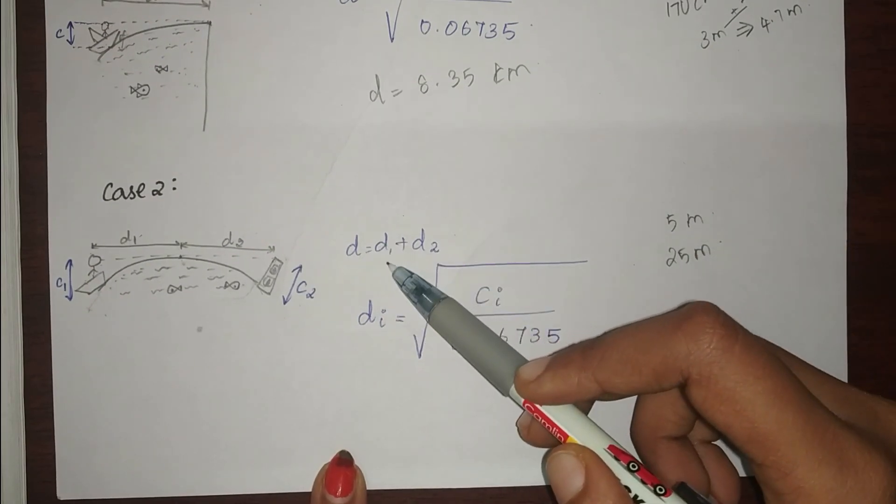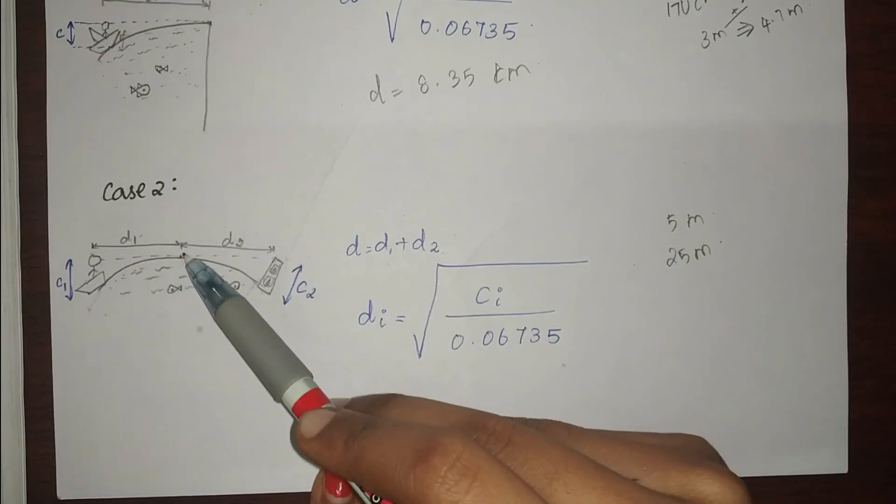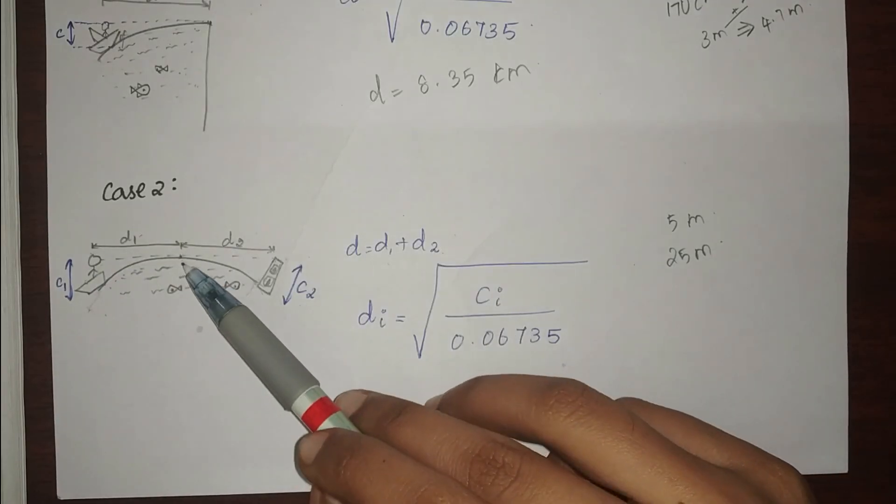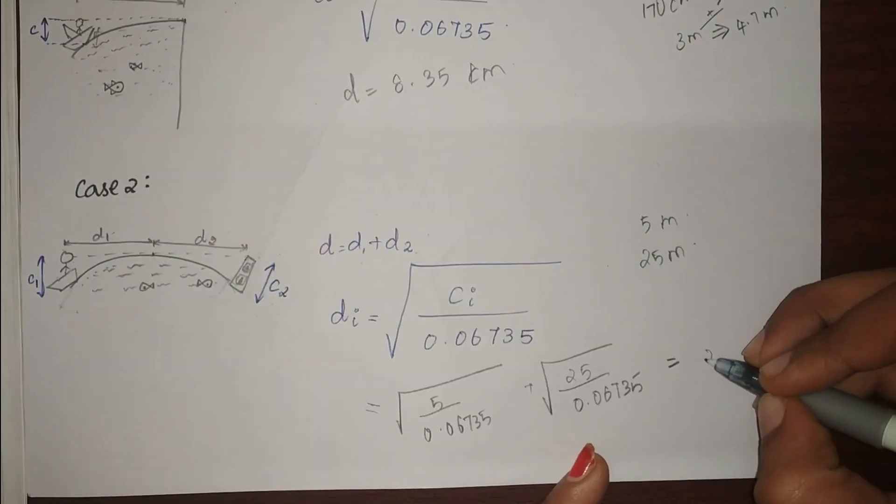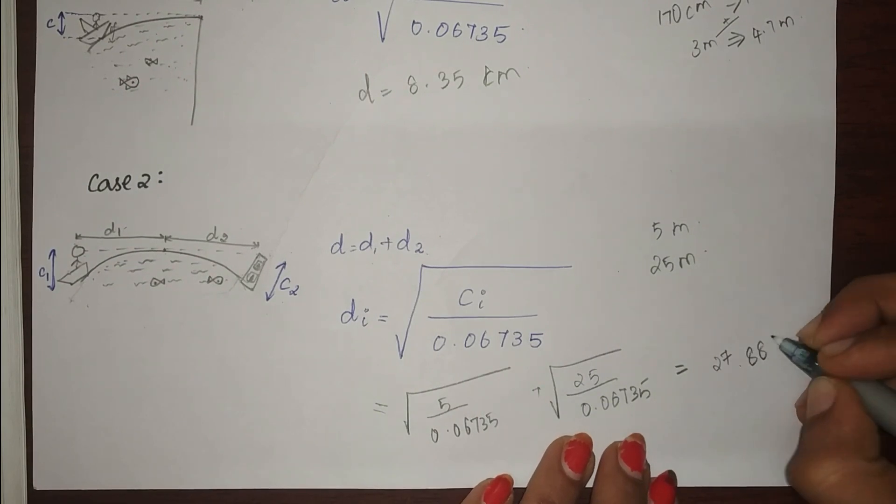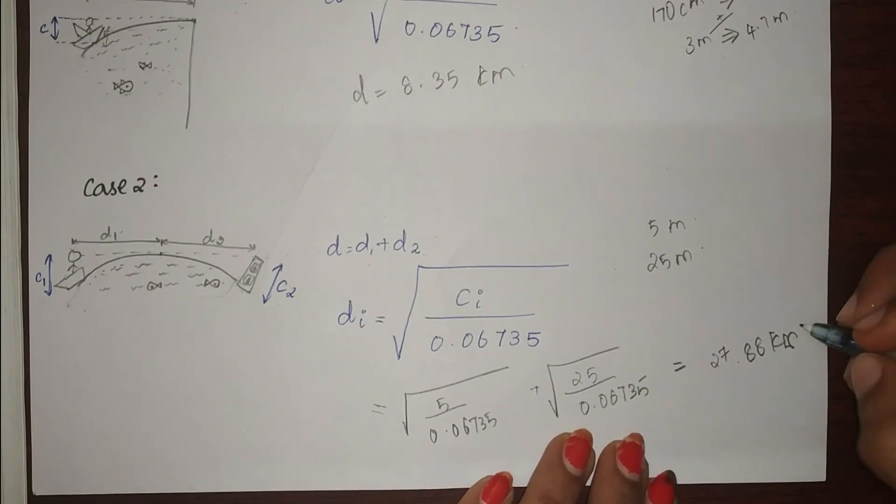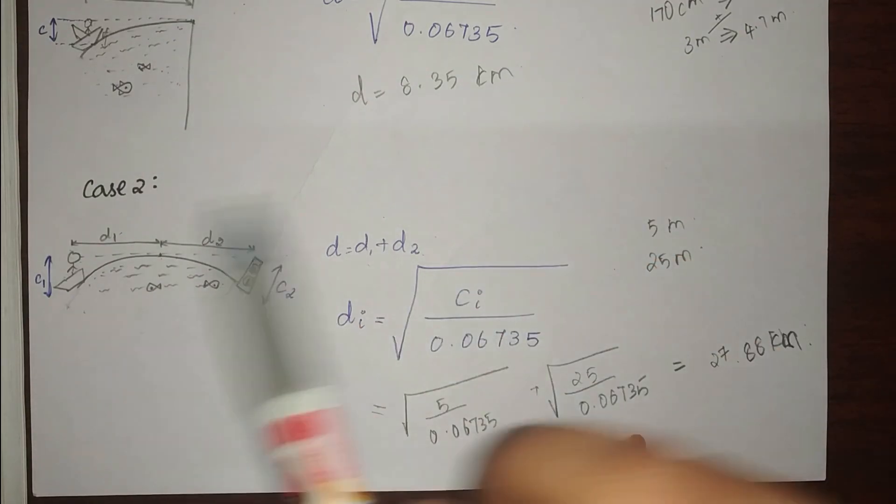So now you can find the distance between you and the lighthouse using this formula. D is equal to D1 plus D2, where D1 is distance between you and the horizontal, and D2 is the distance between horizontal and the lighthouse. So on doing so, we will get the answer of 27.88 kilometers. So this will be the distance between me and the lighthouse.